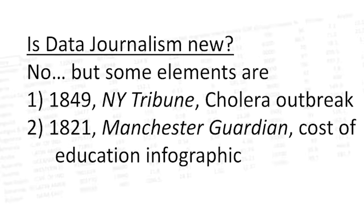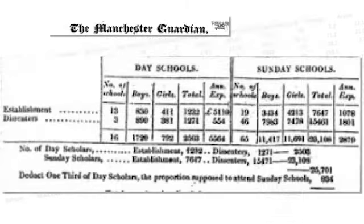And actually, that New York Tribune story on the cholera outbreak in 1849 wasn't even the first data journalism. The Guardian in London reported on student enrollment and the cost of education in England using data in 1821, and they visualized it in their newspaper.